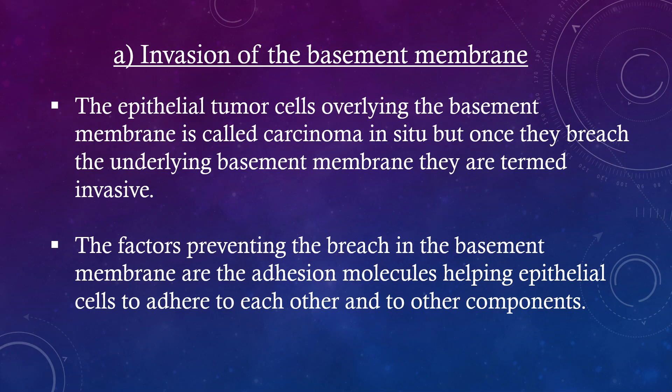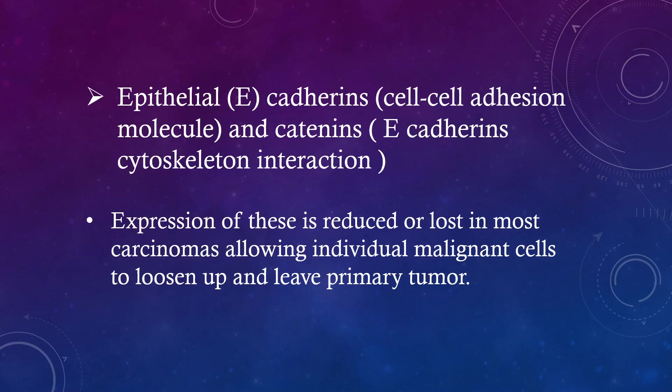Invasion of the basement membrane: epithelial tumor cells overlying the basement membrane are called carcinoma in situ, but once they breach the underlying basement membrane they are termed invasive. The factors preventing breach of the basement membrane include adhesion molecules that help epithelial cells adhere to each other and to other components — specifically E-cadherin cell-to-cell adhesion and catenin–cytoskeleton interactions. Expression of these is reduced or lost in most carcinomas, allowing individual malignant cells to loosen up and leave the primary tumor.